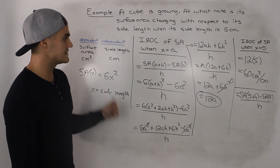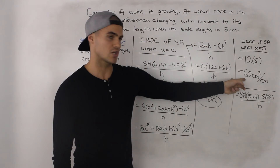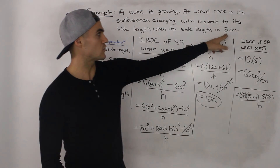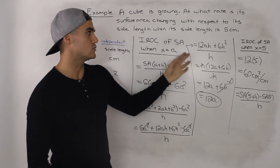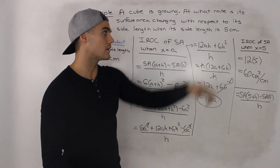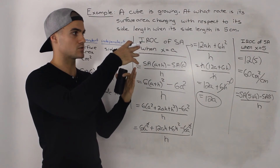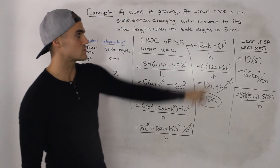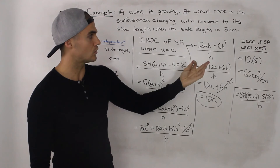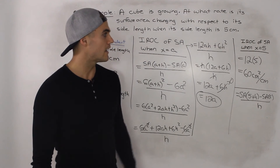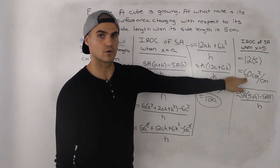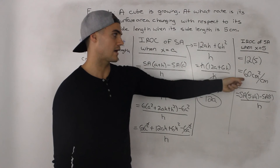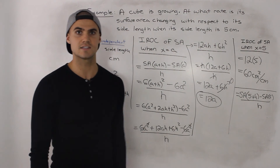You can also get the instantaneous rate of change using the preceding and following method and the centered interval method. Since we're finding the instantaneous rate of change at 5, you can use values really close like 4.9 or 5.1, find the average rate of change between those intervals, then average them out. Or find the average rate of change over the centered interval between 4.9 and 5.1, or even closer like 4.99 and 5.01. You'd get something very close to 60. But for the exact instantaneous rate of change, you need the difference quotient, giving exactly 60 centimeters squared per centimeter.